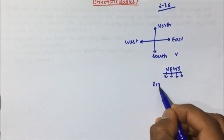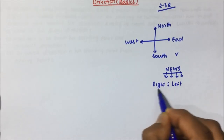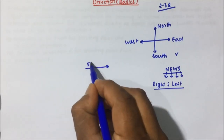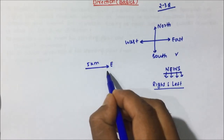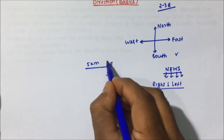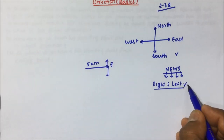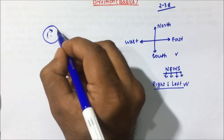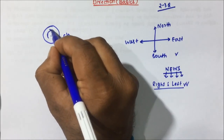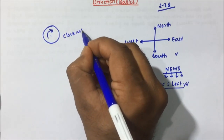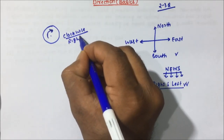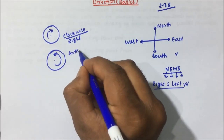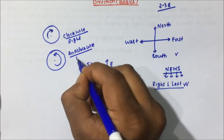Now, right and left will be asked in questions on direction. The problems will be something like: a person walks towards east five kilometers and from there the person takes a right or a left. A student will have confusion about how to take right and how to take left. If you know clockwise — clockwise means how the minute hand moves — moving in that same direction is clockwise, which is right. Anti-clockwise is the opposite direction, which means left.